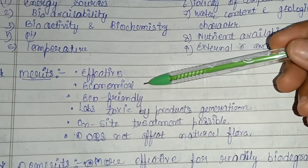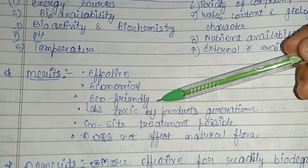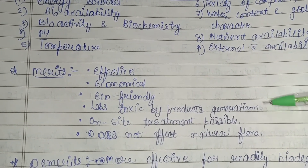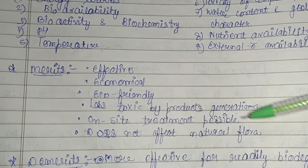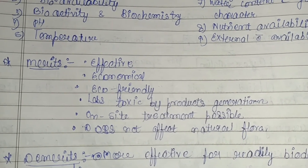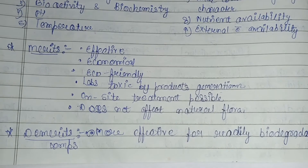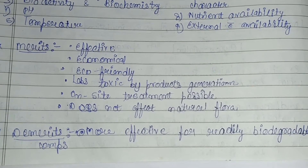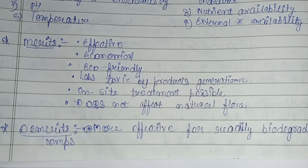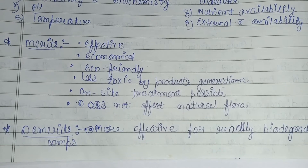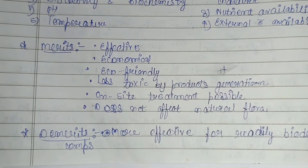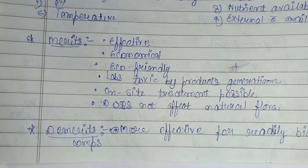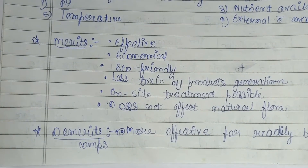The merits of bioremediation include: it is effective, economical (low cost), eco-friendly, generates less toxic byproducts (H₂O and CO₂), on-site treatment is possible as in the in-situ method, and it does not affect the natural flora at the surface. Demerits include: it is more effective only for readily biodegradable compounds, specific environmental conditions and specific microbial flora are required, and long time is required to remove or transform contaminants.